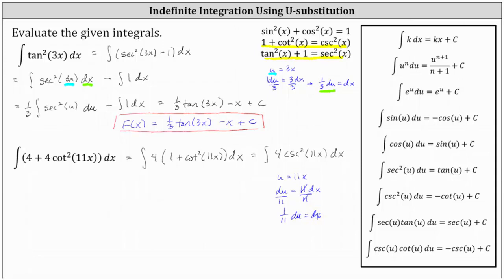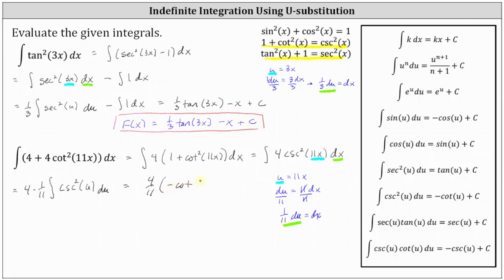Writing the integral in terms of u, with u equal to 11x and one eleventh du equal to dx: let's factor out the 4, then dx is equal to one eleventh du, so factor out the one eleventh, giving us du. Cosecant squared 11x is cosecant squared u. Simplifying, we have 4 elevenths times the integral of cosecant squared u du, which equals 4 elevenths times negative cotangent u. Since u is 11x, this gives us 4 elevenths times negative cotangent 11x, plus c.